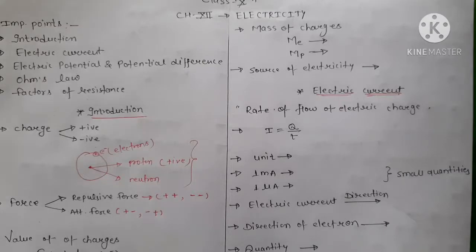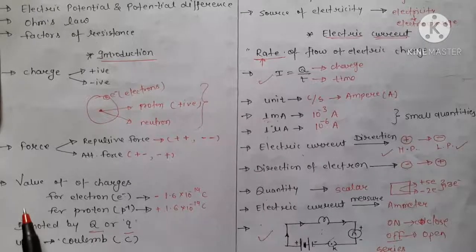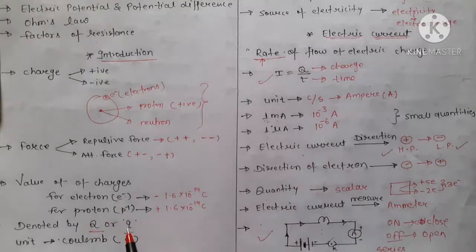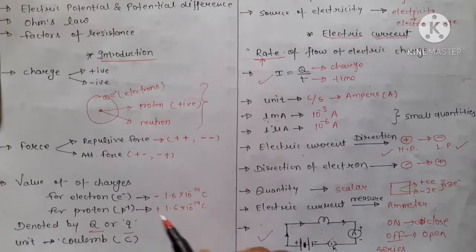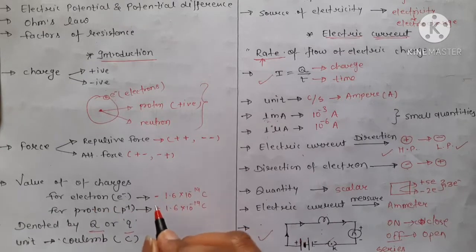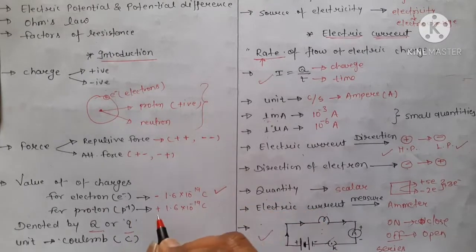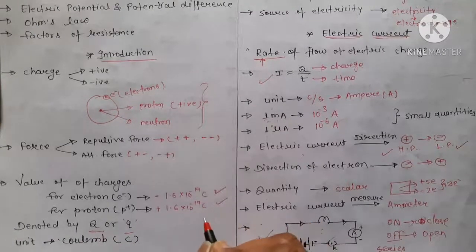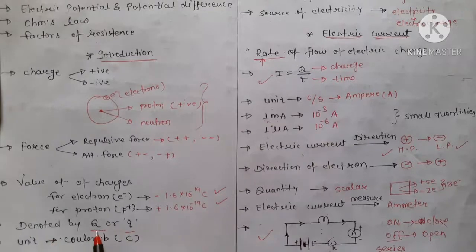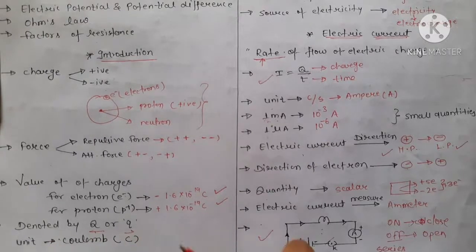Now let's discuss values of charges. For electrons and protons, the values are the same but the signs are different because the nature of the two fundamental particles is different. For electrons, we use minus sign: 1.6 × 10⁻¹⁹ coulomb. And for proton, it is positive: 1.6 × 10⁻¹⁹ coulomb. Coulomb is the unit — just as you use meter for length, you use coulomb for charges. Charges are denoted by capital Q or small q, and the unit is coulomb, represented as C.